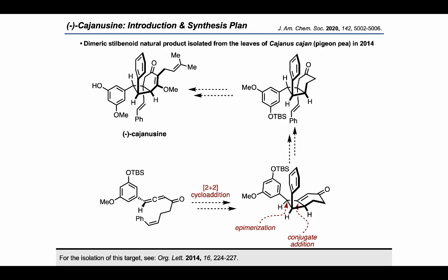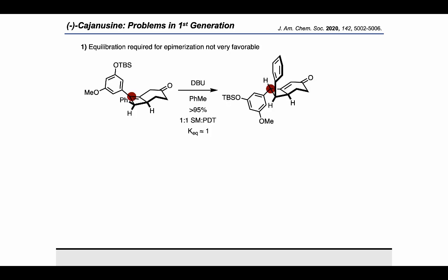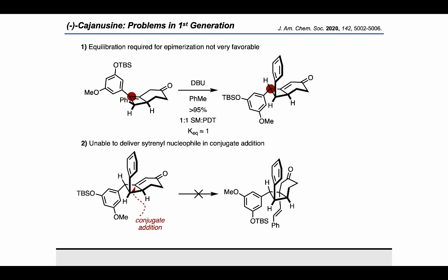In the first generation approach to the synthesis of Cajanacine, the authors found a few important issues worth pointing out. First, the equilibration they had planned to use to execute an epimerization on the cyclobutane ring was actually not favorable and could not be pushed to completion. Secondly, they were not able to carry out the conjugate addition, most likely due to the steric congestion present on the cyclobutane.